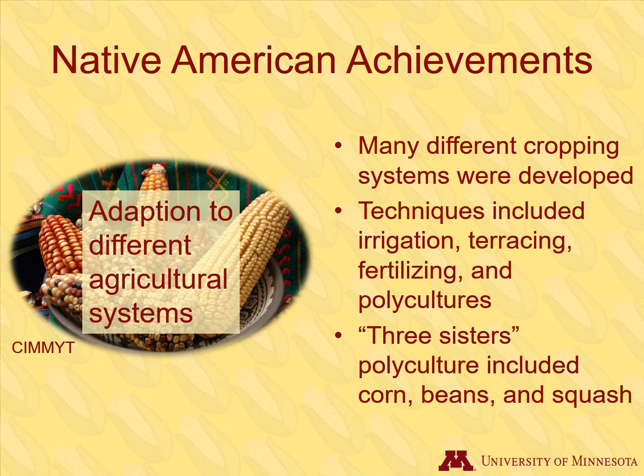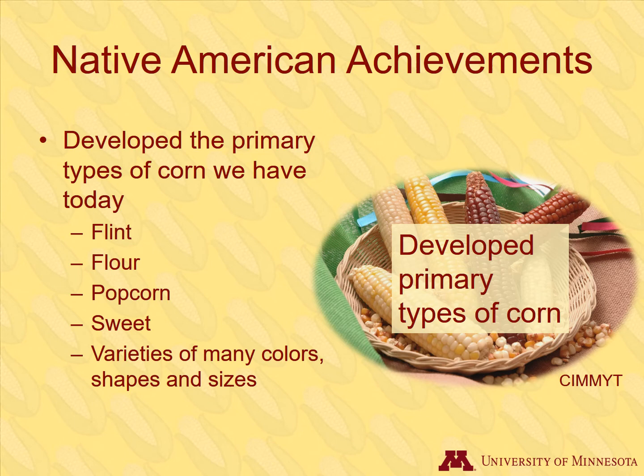A type of polyculture that Native Americans used is called the Three Sisters, where corn, beans, and squash are planted together on a mound. This system was beneficial because the corn stalks provide physical support for the growing squash vines, the beans provide a source of nitrogen for the other plants, and the squash provides ground cover to shade out weeds.